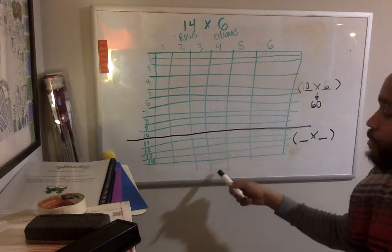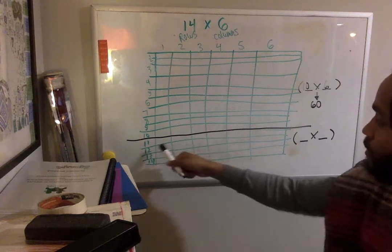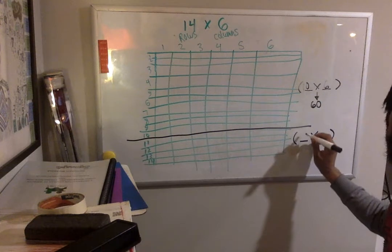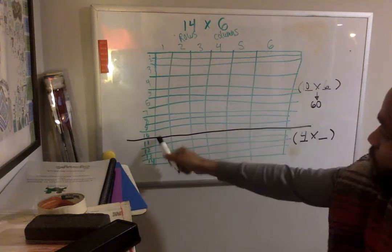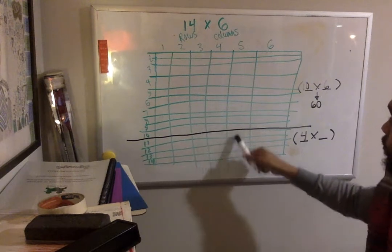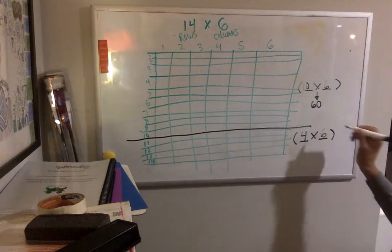Down here on this bottom array, I have 1, 2, 3, 4—4 rows. And then I have 1, 2, 3, 4, 5, 6 columns. 4 times 6.